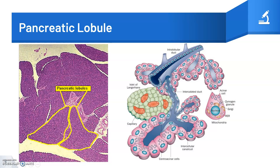Acinar cells have peripherally located nuclei and abundant granular cytoplasm. They secrete a variety of active enzymes and inactive proenzymes into the acinar lumen. These secretion products are carried from the acinus to the duodenum via the ductal system. Proenzymes are then converted to active enzymes in the duodenum.